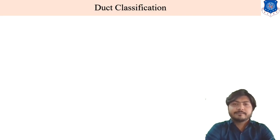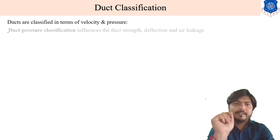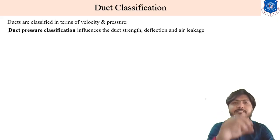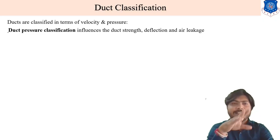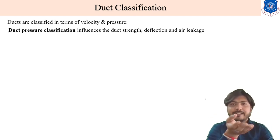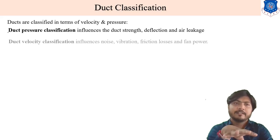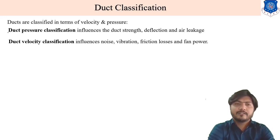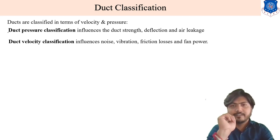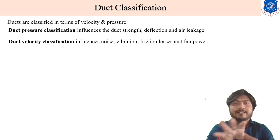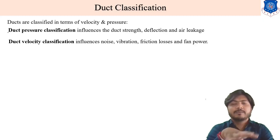Duct classification is mainly based on velocity and pressure. Duct pressure classification influences duct strength, deflection, and air leakage. If pressure is high in the duct, conditions such as air leakage and deflection may occur. Regarding velocity, higher air velocity in the duct increases noise, vibration, friction losses, and fan power.